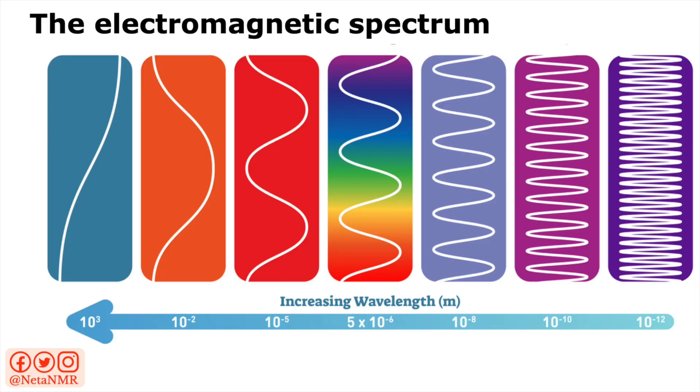The energy that we can detect with our own eyes is a very tiny portion of the electromagnetic spectrum. But what is the electromagnetic spectrum? The electromagnetic spectrum consists of all the electromagnetic waves of all possible energies, moving through space at the speed of light.